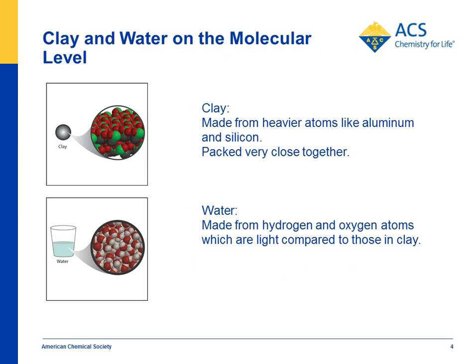Then we have students put clay in one of the tea light candle containers and water in the other. It's obvious that the clay is much heavier than an equal volume of water, for the same reason as before. The clay is made from pretty heavy atoms — aluminum and silicon — packed very closely together. It makes sense that clay would be more dense than water, so when you compare equal volumes, the clay side of the balance goes down.